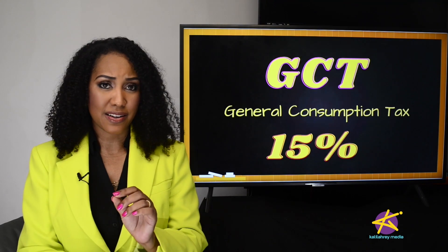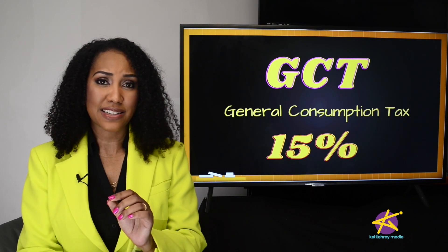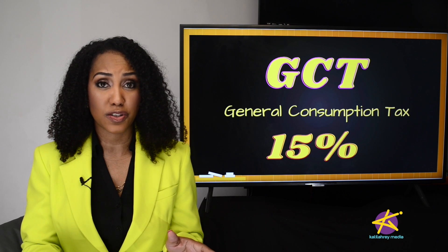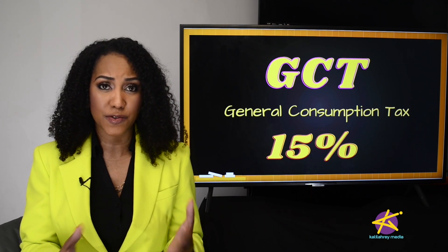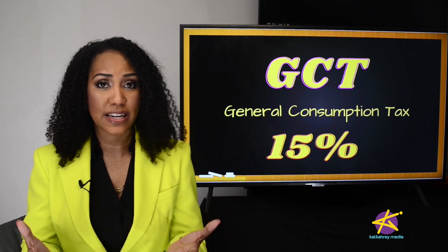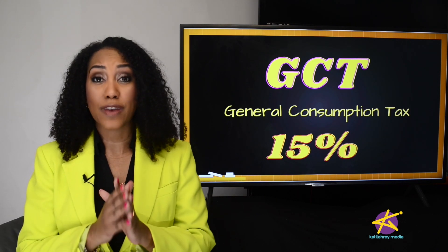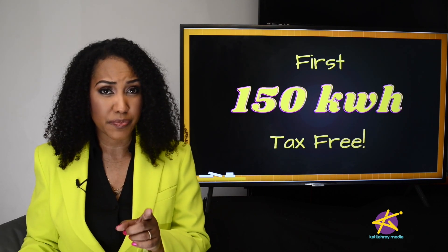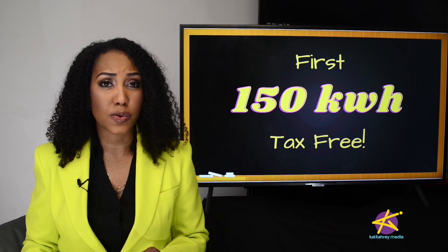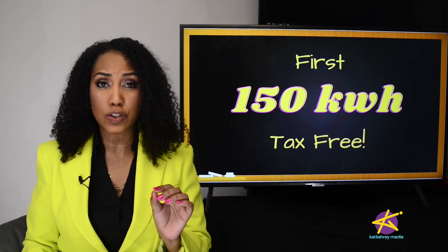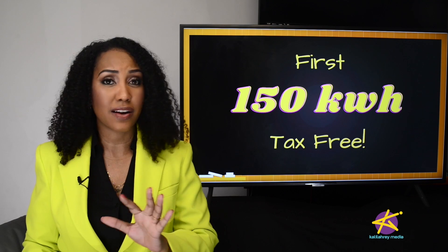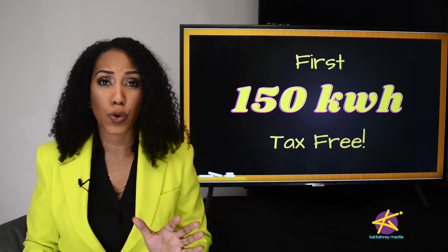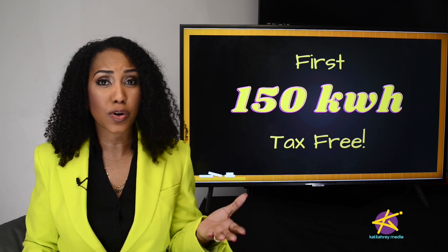First of all, for business customers, the tax calculation is easy — you pay GCT on everything you consume. GCT, of course, stands for General Consumption Tax, and the rate is 15%. But for residential customers, it gets trickier. The first thing you need to know is that your first 150 kilowatt hours are tax-free. So if you use less than that, you actually pay no tax. And if you use more, you only pay GCT on your consumption above 150.